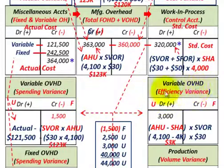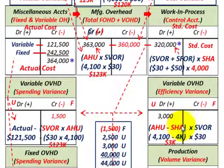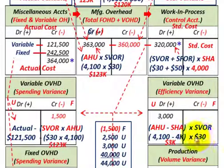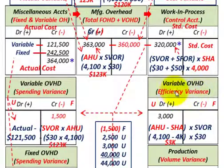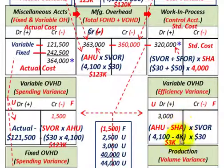For the variable overhead efficiency variance: AHU 4,100 minus SHA 4,000 = 100 hours difference, times SVOR $30 per hour = $3,000 unfavorable. We debit the variable overhead efficiency variance for $3,000 because we used 100 more actual hours than the 4,000 standard hours allowed.